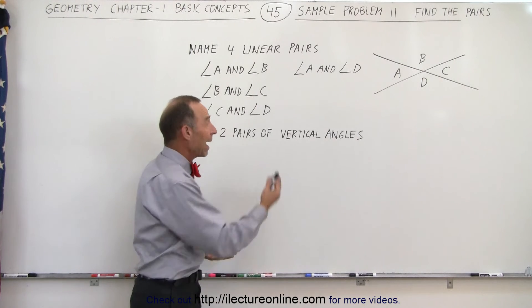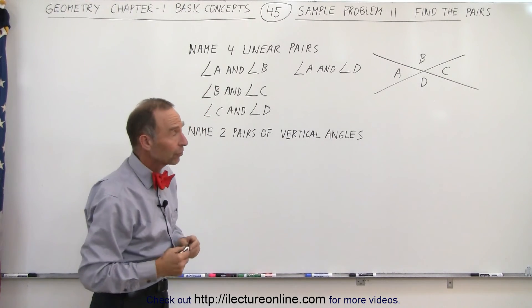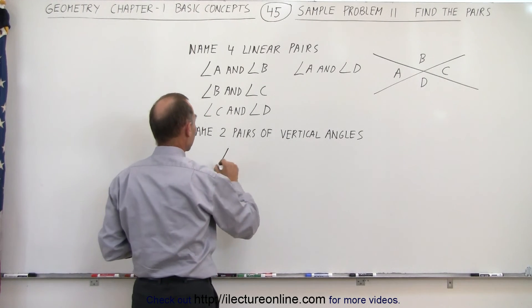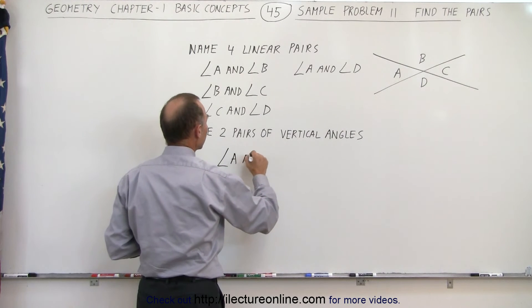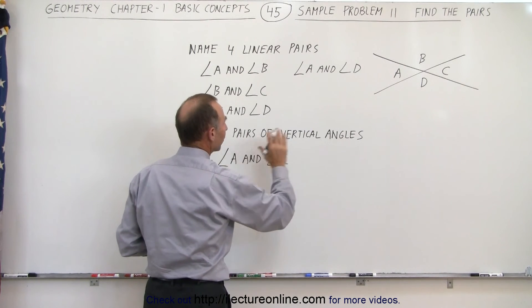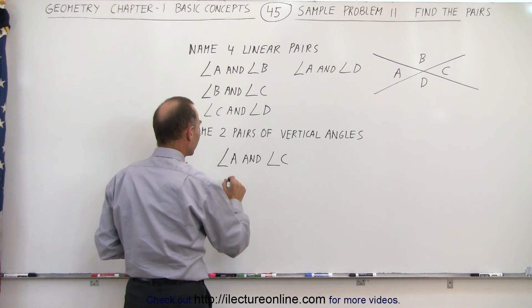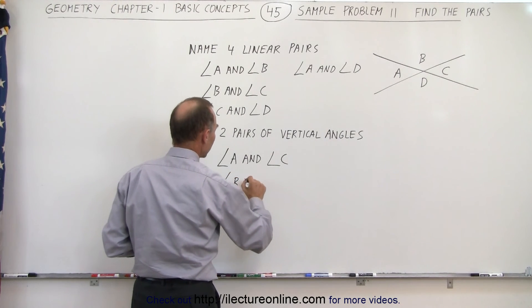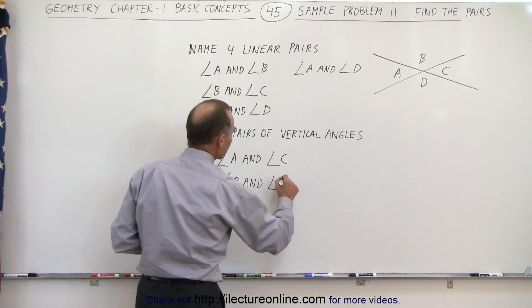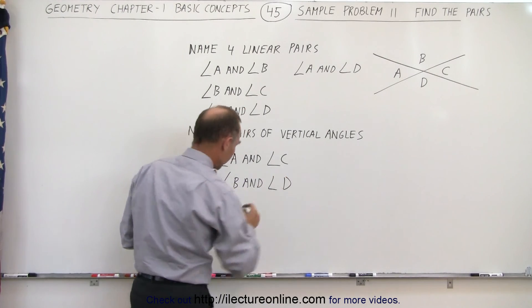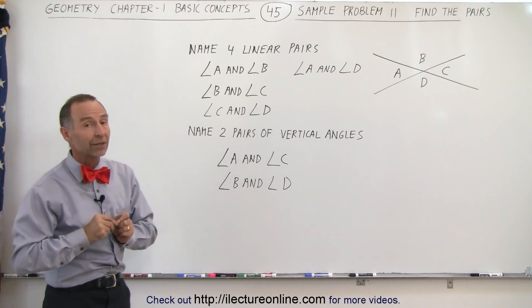That defines them as a pair of vertical angles. So therefore we can say that angle A and angle C are a pair of vertical angles, and likewise angle B and angle D is a pair of vertical angles, and that's how we can tell the difference.